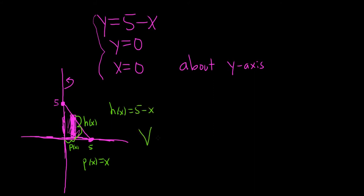So the volume, remember shell has the 2 pi. We're integrating with respect to x, so we're going left to right, so from 0 to 5. And the formula is p times h. So it's just x times 5 minus x dx.